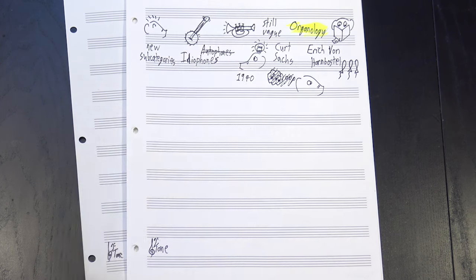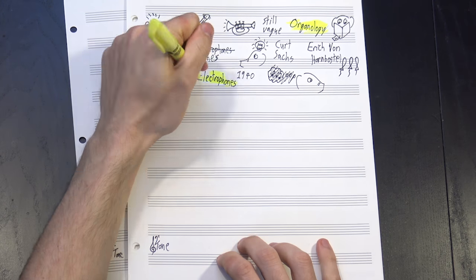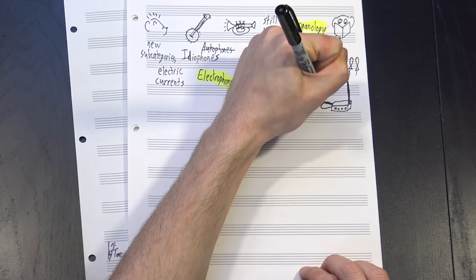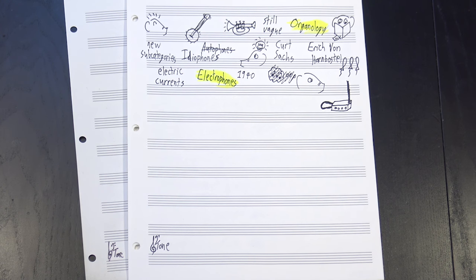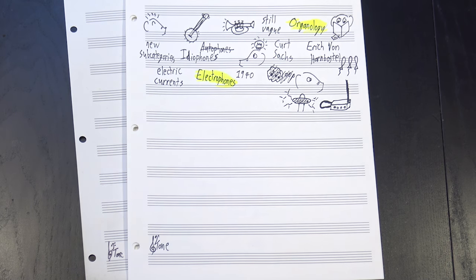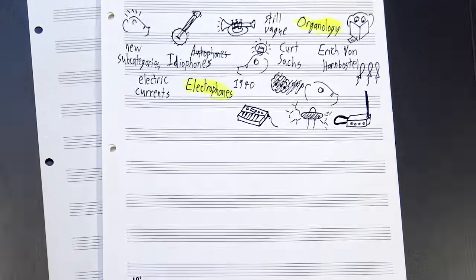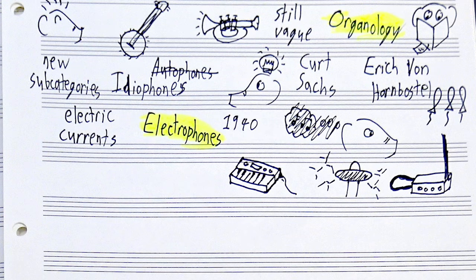Since Sachs had to return in 1940 to add a whole new category called electrophones that produce sound through electric currents. This includes things like theremins and singing tesla coils, as well as more normal things like synthesizers, but c'mon y'all, singing tesla coils.